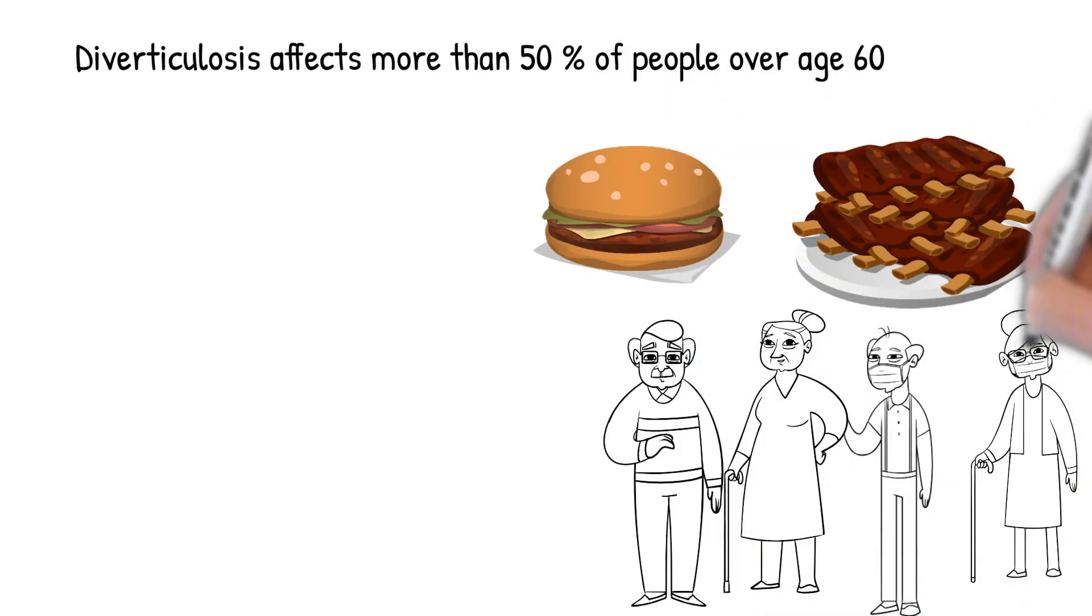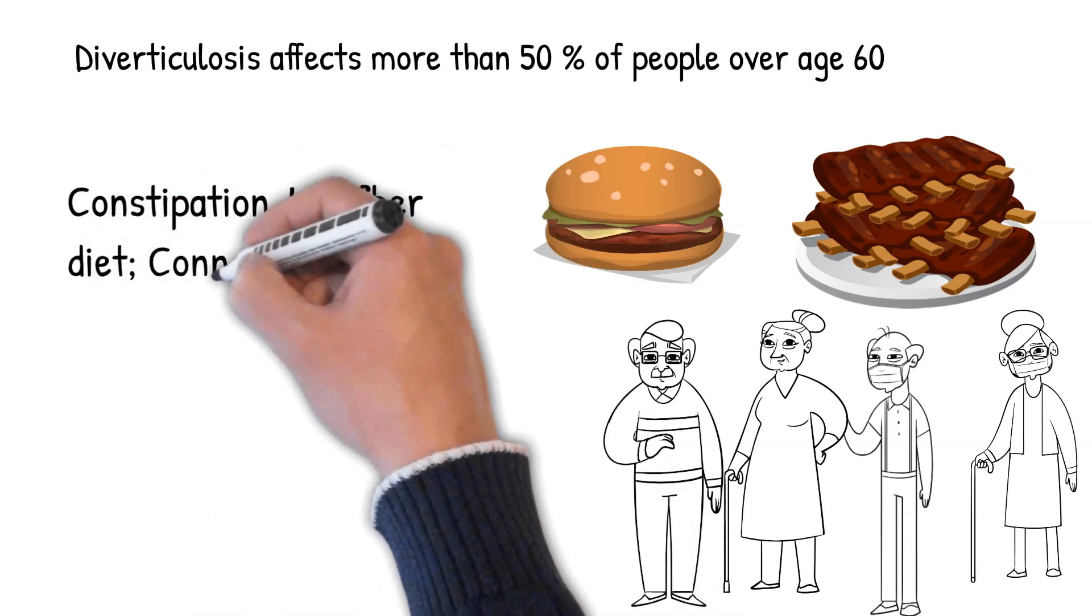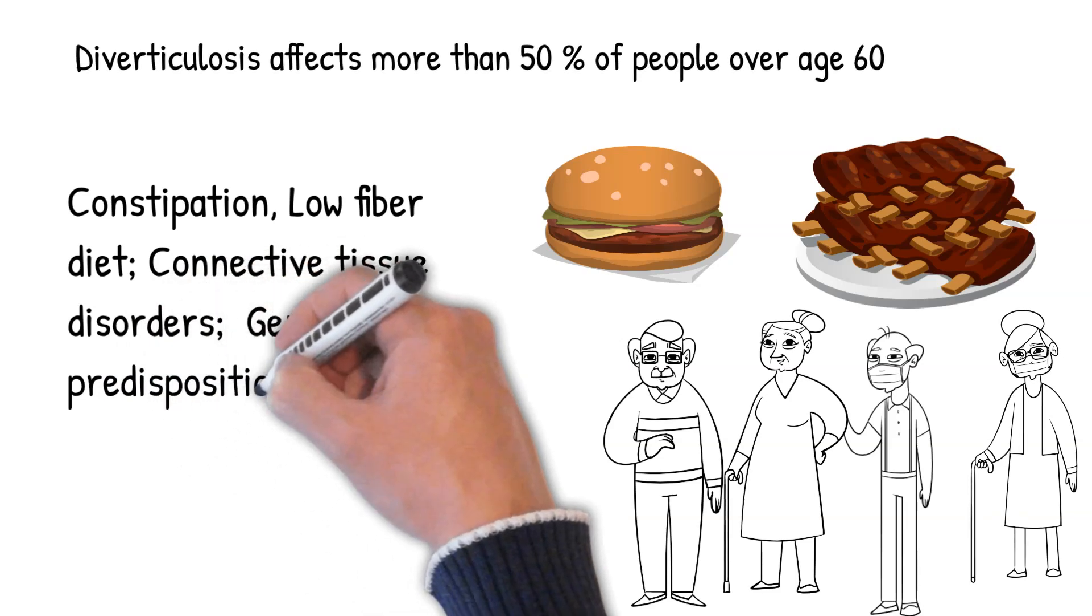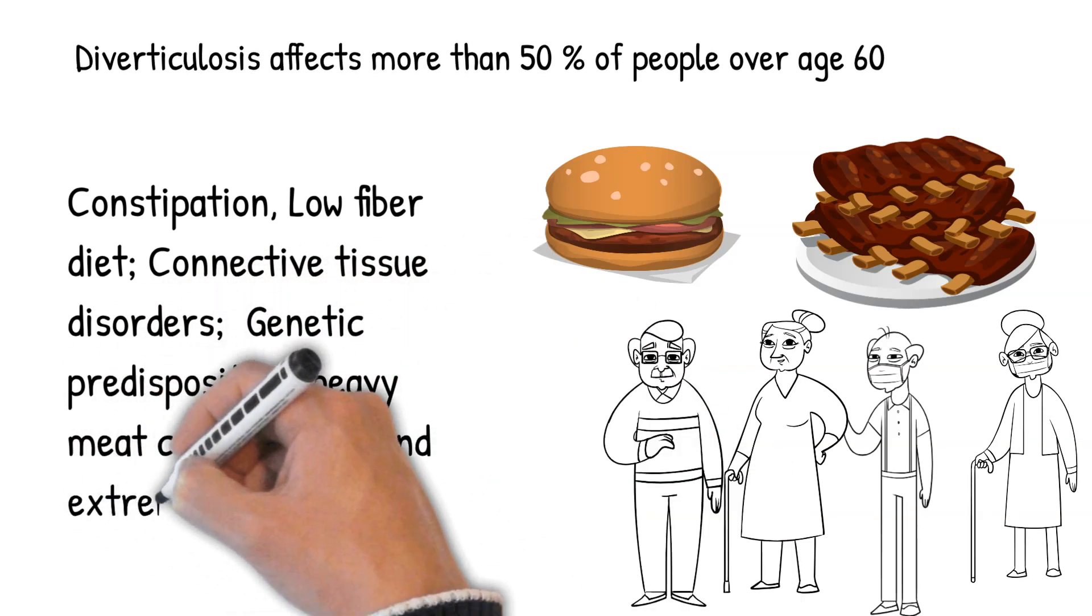Other risk factors include constipation, low-fiber diet, connective tissue disorders such as Marfan syndrome and Ehlers-Danlos syndrome, genetic predisposition, heavy meat consumption, and extreme weight loss.